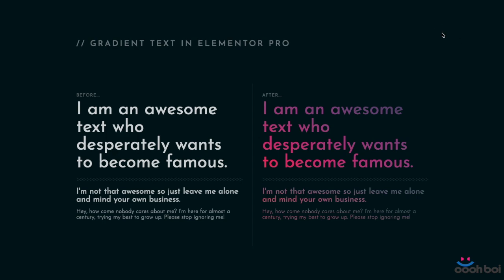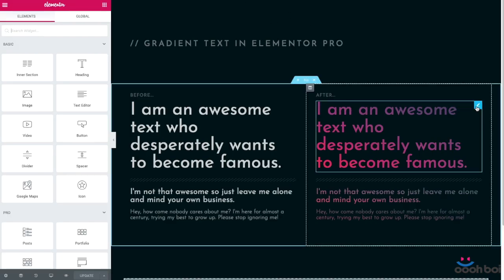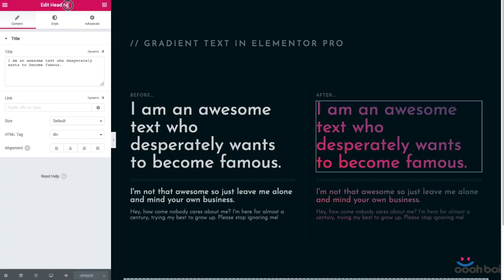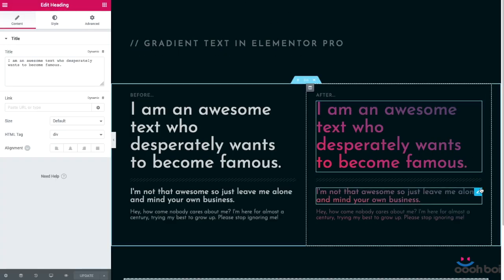Hello everyone, this is Oboy and in this tutorial I'm going to teach you how to style text with gradient color in Elementor Pro. On the left hand side of the screen you can see the text without the gradient being applied, while the right hand side demonstrates the final goal. It has to be pointed out that all of the text widgets used here are the heading widgets.